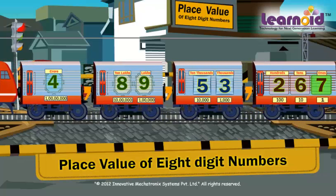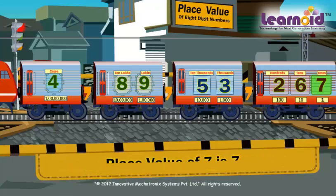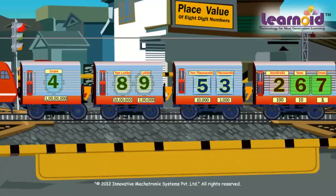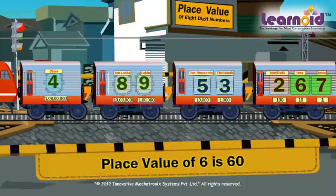Number 7 is in the ones window. Its place value is 7. Number 6 is in the tens window. Its place value is 60.